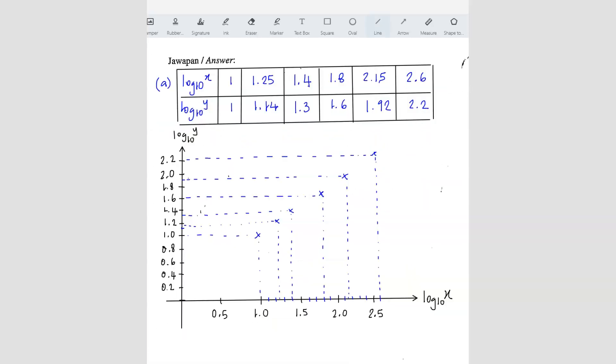Alright guys. So I've already redrew the table for you all and plot the graph. Just make sure when you are doing the scale, please follow what they say. So in this case, they said every 2cm represents 0.5 for the x-axis. So make sure you follow that. And every 2cm represents 0.2 for the y-axis.